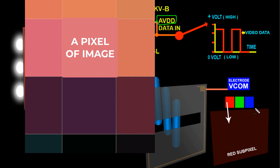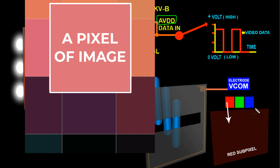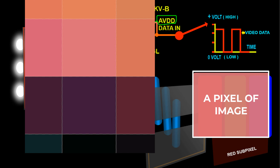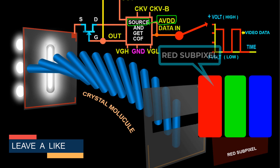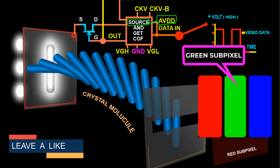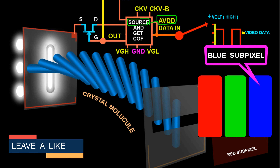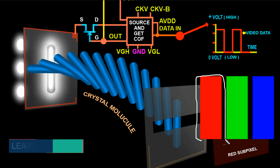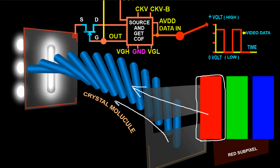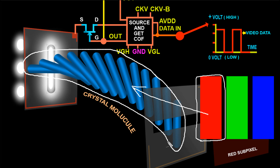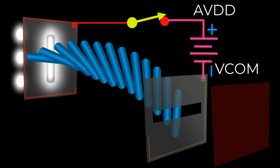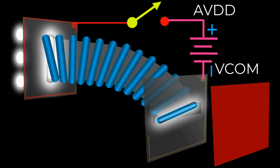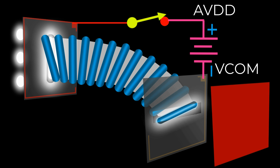A pixel of the image on the LCD screen is displayed on top of an RGB pixel. Within this pixel, there is the red sub-pixel, the green sub-pixel, and the blue sub-pixel. Below each of these sub-pixels there is one liquid crystal cell. These crystal cells control the brightness of the screen light. Watch part one for more details.